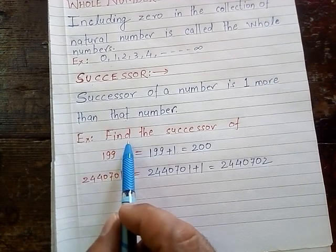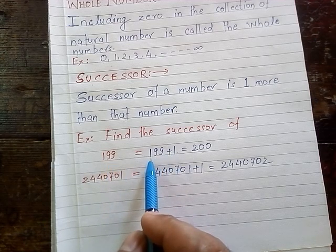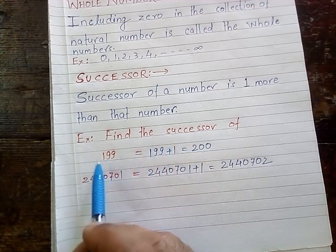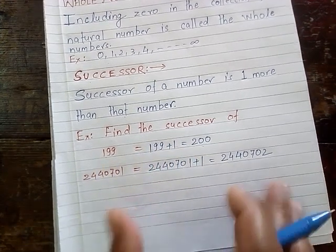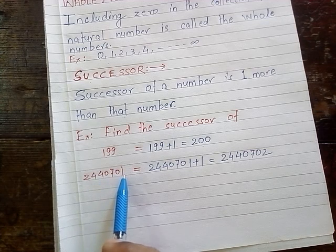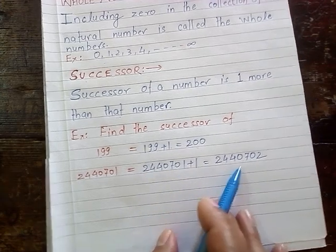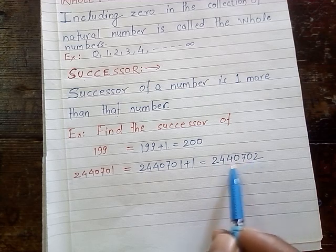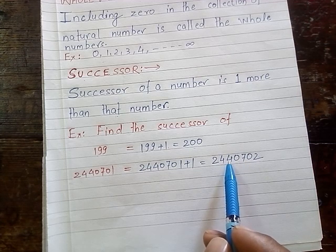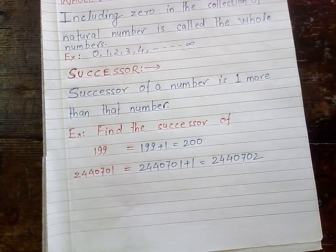For example, find the successor of 199. We will add 1 to 199, then we will get 200. So 200 is the successor of 199. Again, find the successor of 24,40,701. We will add 1 to the given number, then we will get 24,40,702. So 24,40,702 is the successor of 24,40,701. This is the basic point of successor.